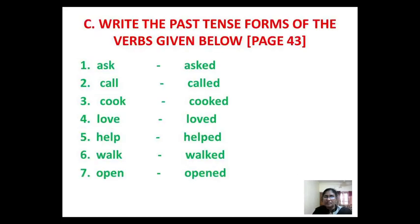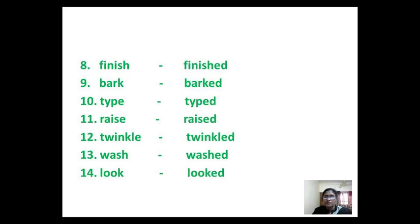Write the past tense forms of the verbs given below, page 43. Ask — asked. Call — called. Cook — cooked. Allow — allowed. Help — helped. Walk — walked. Open — opened. Finish — finished. Bark — barked. Type — typed. Raise — raised. Tangle — tangled. Wash — washed. Look — looked.